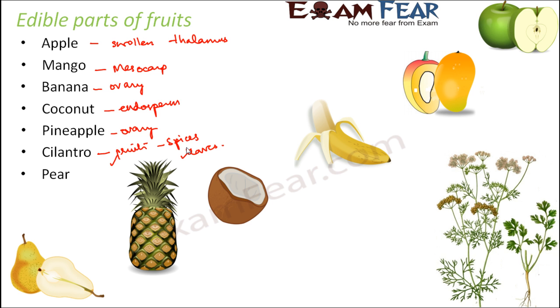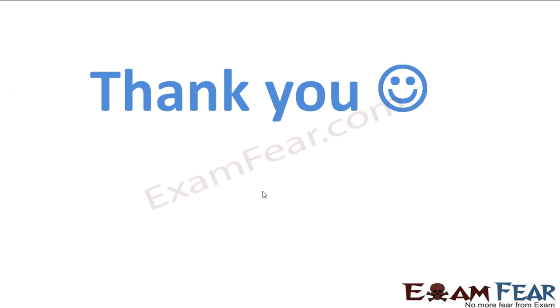In pear, again, the edible part is the ovary plus the thalamus. The thalamus is fleshy and edible.